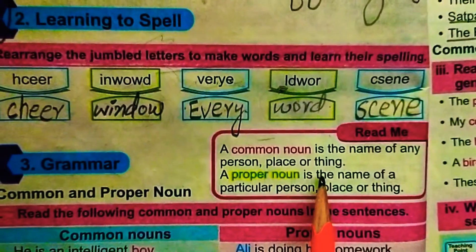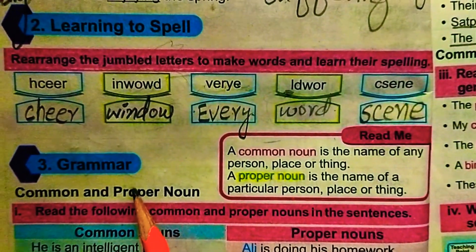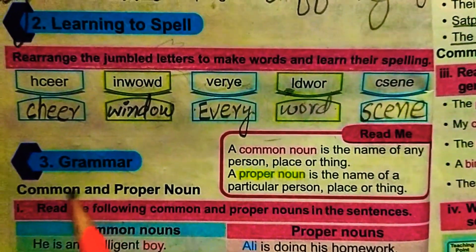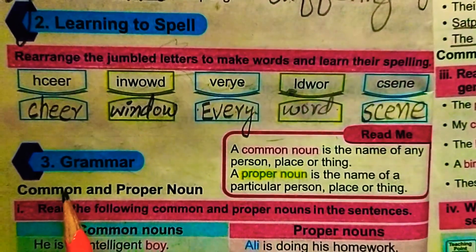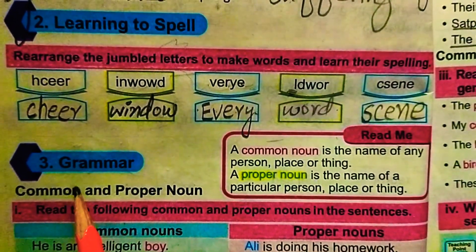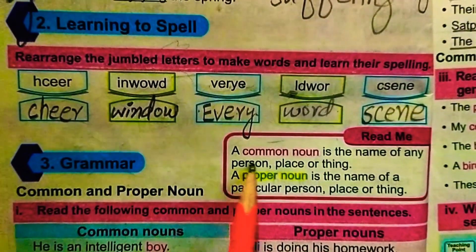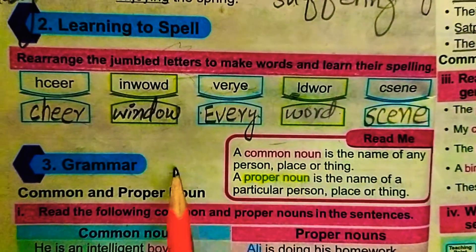Next is Grammar. We will look at common and proper nouns. A common noun refers to general names, while a proper noun refers to specific names of particular people, places, or things.